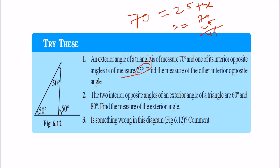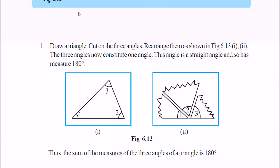The two interior opposite angles of an exterior angle of a triangle are 60 degrees and 80 degrees. Find the measure of the exterior angle. Exterior angle equals 60 plus 80, which is 140 degrees. Is something wrong with this diagram? Yes, it is wrong. The diagram shows 50 plus 50, so the exterior angle should be 100, not what is shown. The exterior angle must equal the sum of the interior opposite angles.